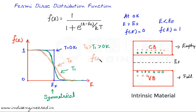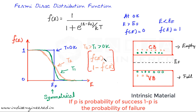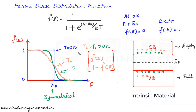If F(E) is the probability of finding an electron, then the probability of finding a hole is 1 − F(E). This is an important point: if there is no electron at a given position, there is a vacancy, or a hole. So the probability of finding a hole equals one minus the probability of finding an electron.